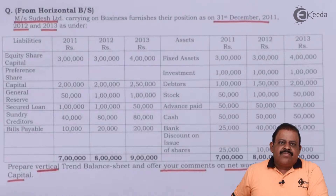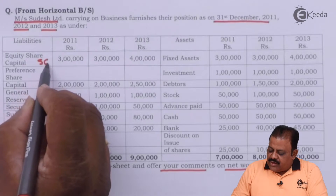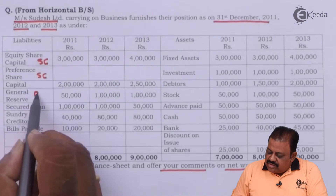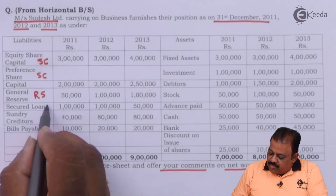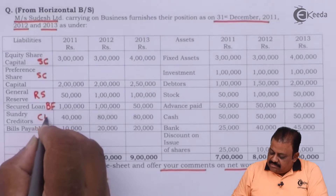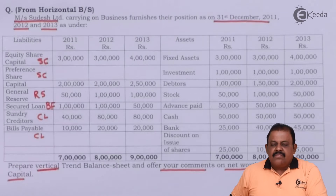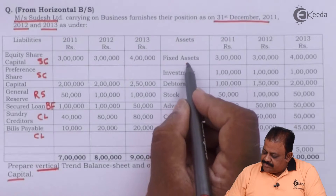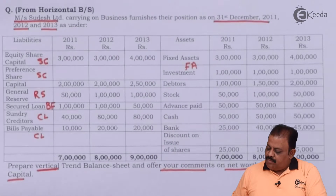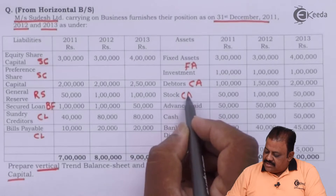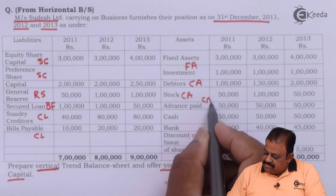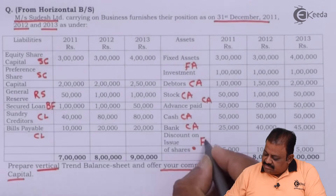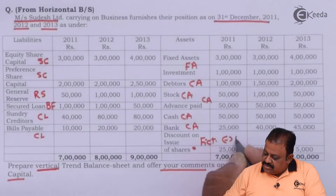We are then required to prepare the trend part of the statement, and finally offer comments. Equity share capital and preference share capital are part of share capital under shareholders fund. General reserve falls under reserves and surplus. Secured loan is part of borrowed funds. Sundry creditors and bills payable are current liabilities. Fixed assets are the first part of application of funds. Investments are long-term investments. Stock, advances paid, cash, and bank balance are current assets. Discount on issue of shares is a fictitious asset, deducted from reserves and surplus.